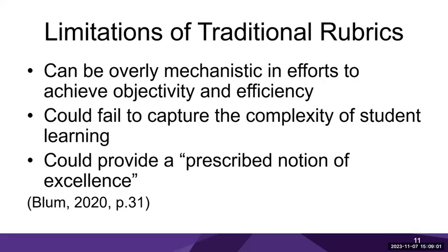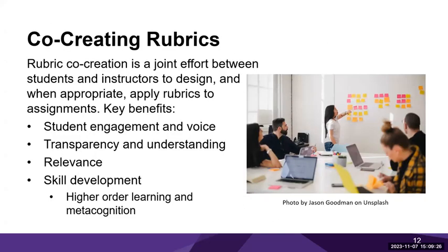There are so many wonderful things about creating and implementing rubrics, but I also want to highlight some limitations of traditional rubrics. They can be very mechanistic in efforts to achieve objectivity and efficiency. They could fail to capture the complexity of student learning and could provide a prescribed notion of excellence. Co-creating rubrics addresses many of these limitations because rubrics then become flexible and relevant — part of a joint effort between students and instructors. Some key benefits are increased student engagement and voice, increased transparency and understanding, increased relevance in course material, increase in skill development, and applying higher-order learning and metacognition skills.